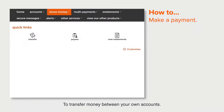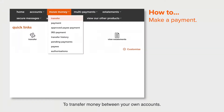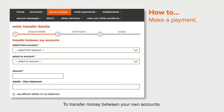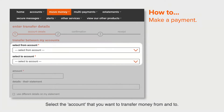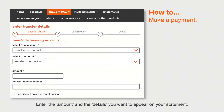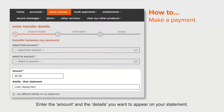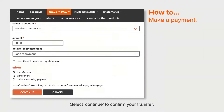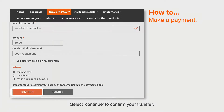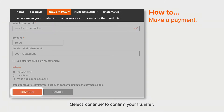To transfer money between your own accounts: select the account you want to transfer money from and to. Enter the amount and the details you want to appear on your statement, then select Continue to confirm your transfer.